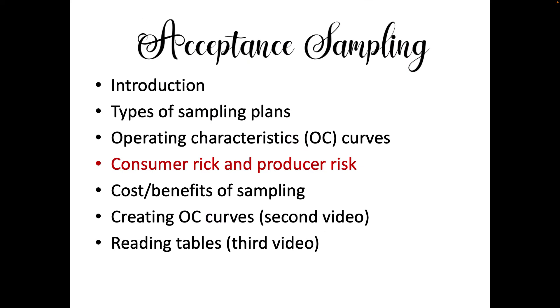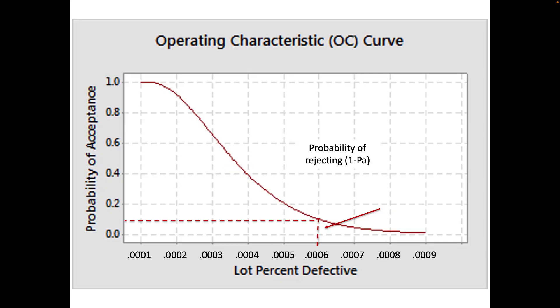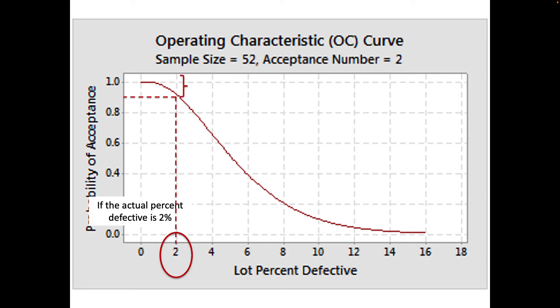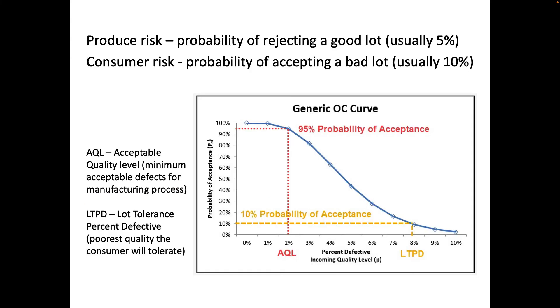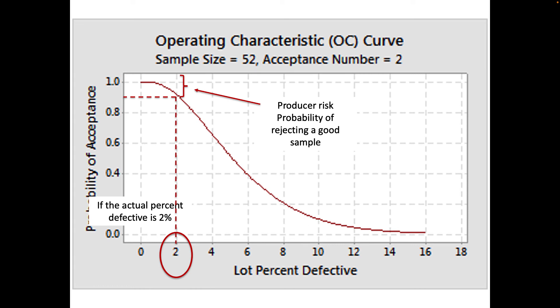Some of the ways we decide is by looking at consumer risk and producer risk. In the case of consumer risk, what we're saying is what's the probability of accepting a bad lot. So we're going to say when we're inspecting it we say this is good and we send it off to the consumer. So that's the consumer risk of getting a bad lot even though we've said it's good. In this case we often accept a level of 10 percent for this, and that's the probability of accepting a bad lot. On the other side, the producer's risk is the probability of rejecting a good lot. We want to really kind of balance the two of these, like how are we going to decide when it's okay to accept a good lot with these kinds of alpha and beta errors.